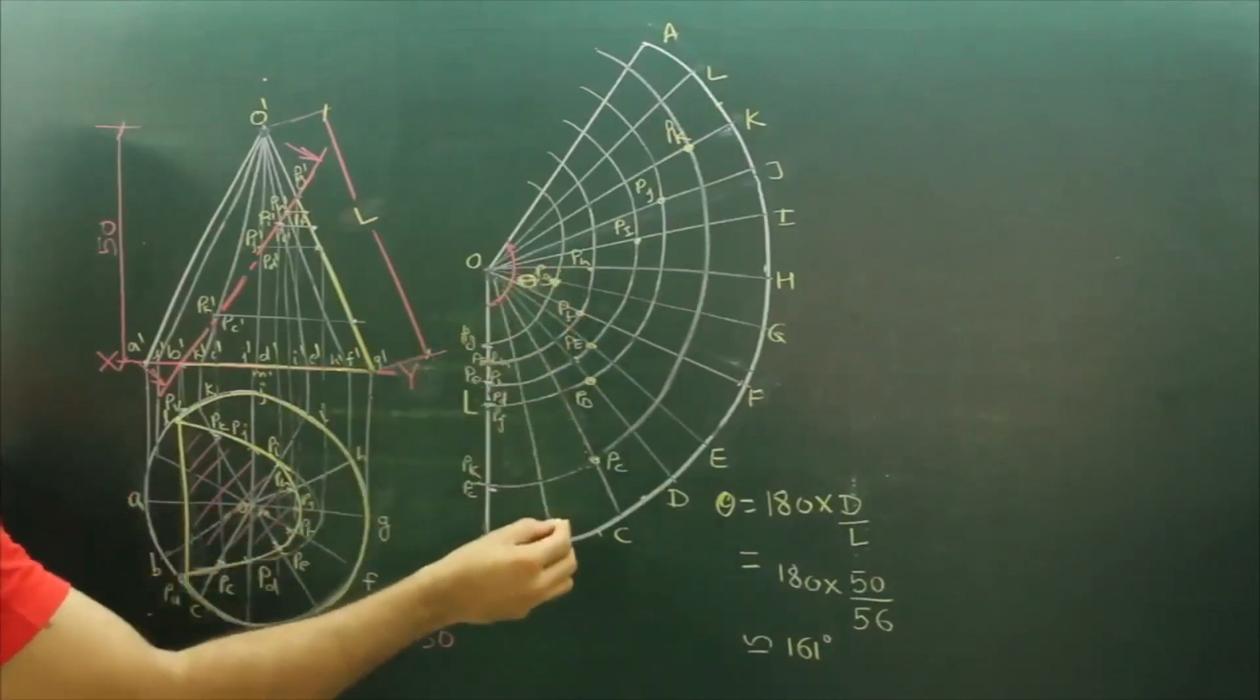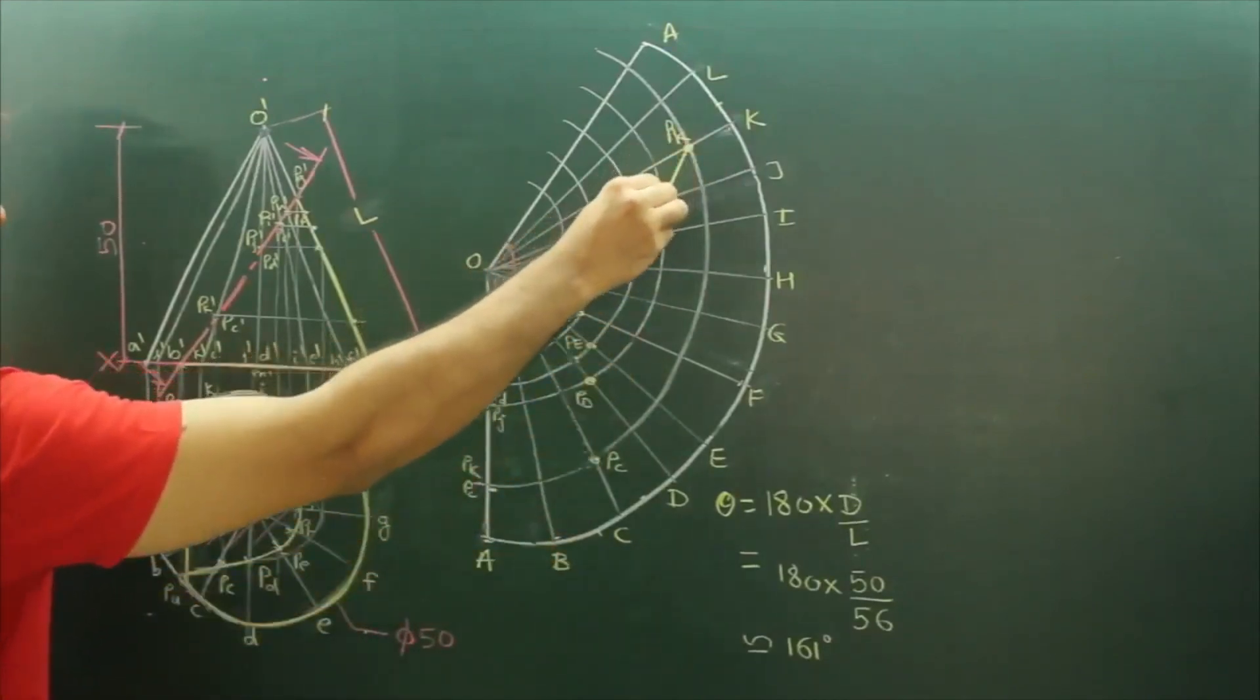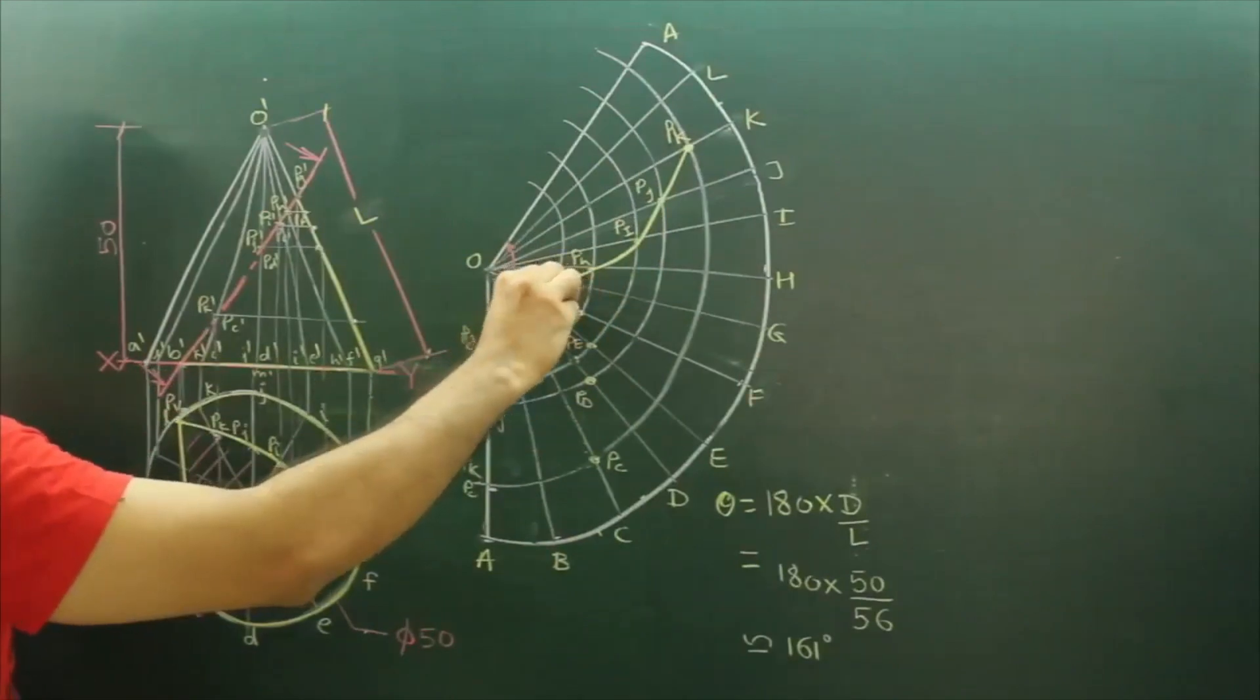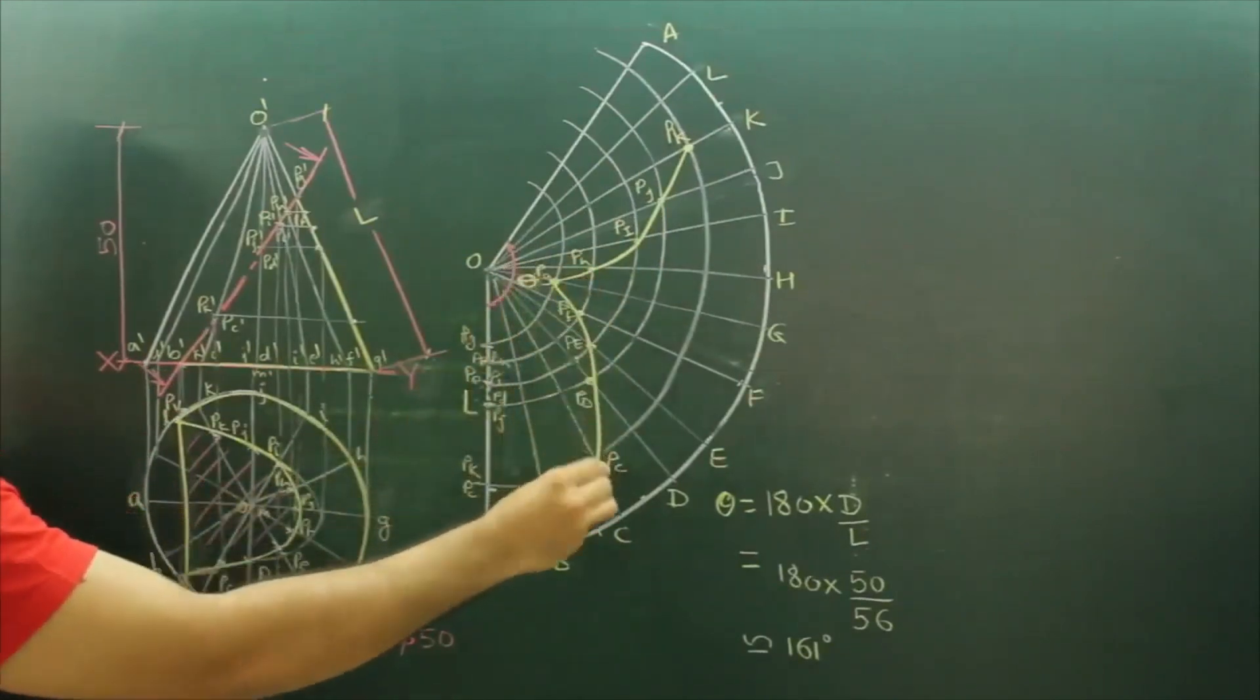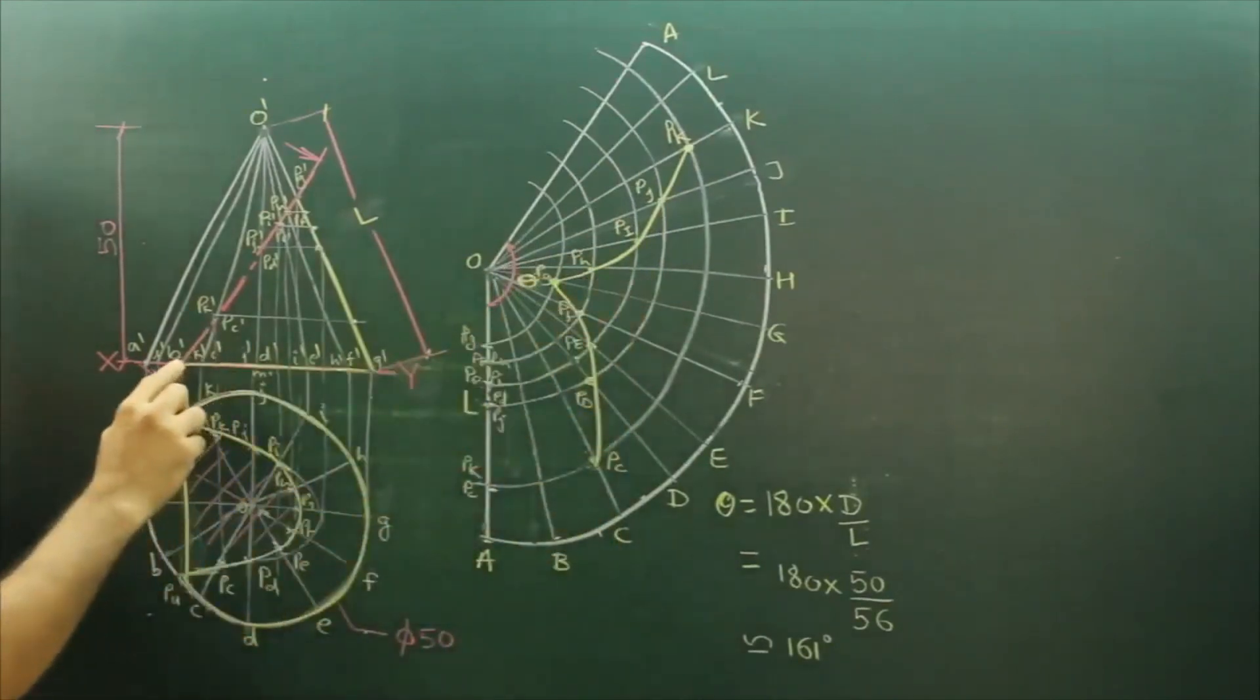We'll get this much. We can join this with freehand - it is not necessary. Now we need to mark this point: PU dash, PV dash, which is cutting at the base.